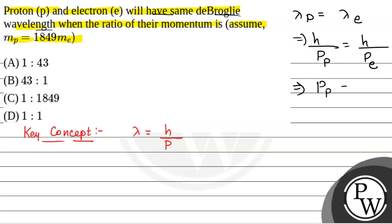So from here we have momentum of proton is equal to momentum of electron. So the ratio of their momentum, that is P_p by P_e, will be equal to 1.